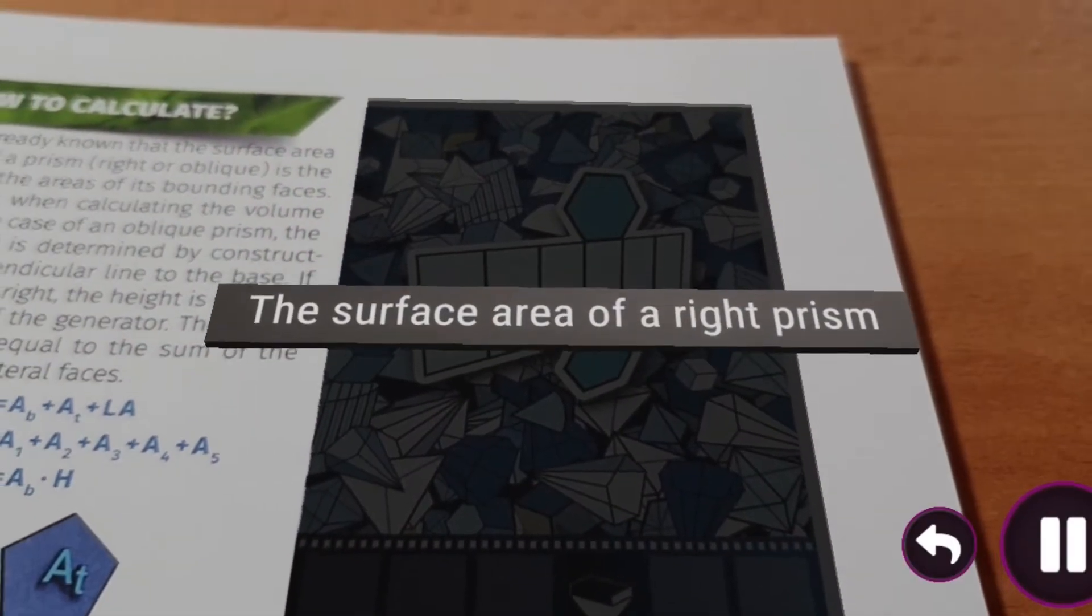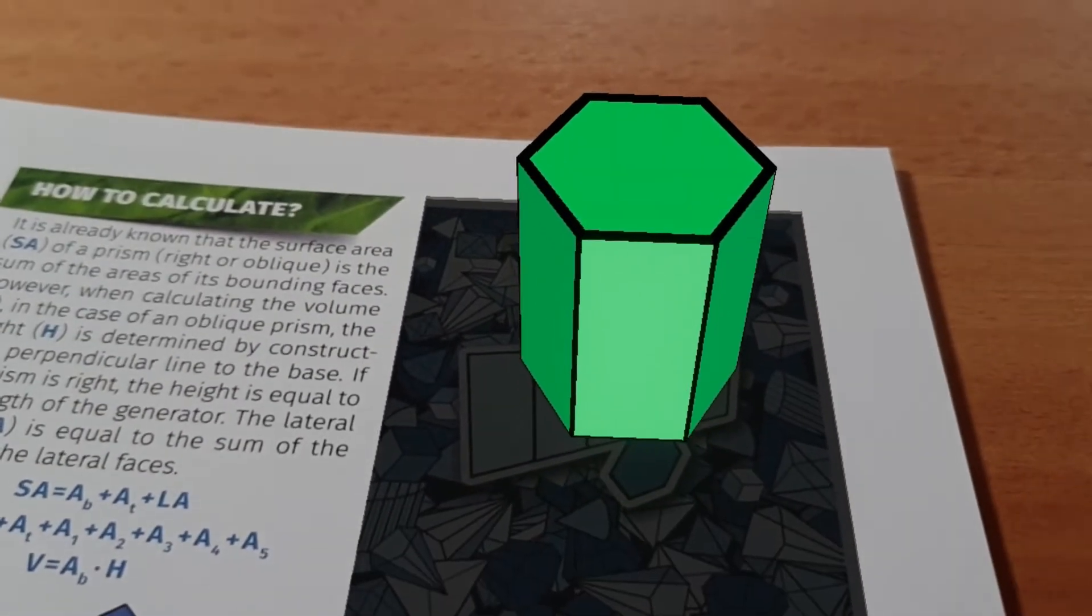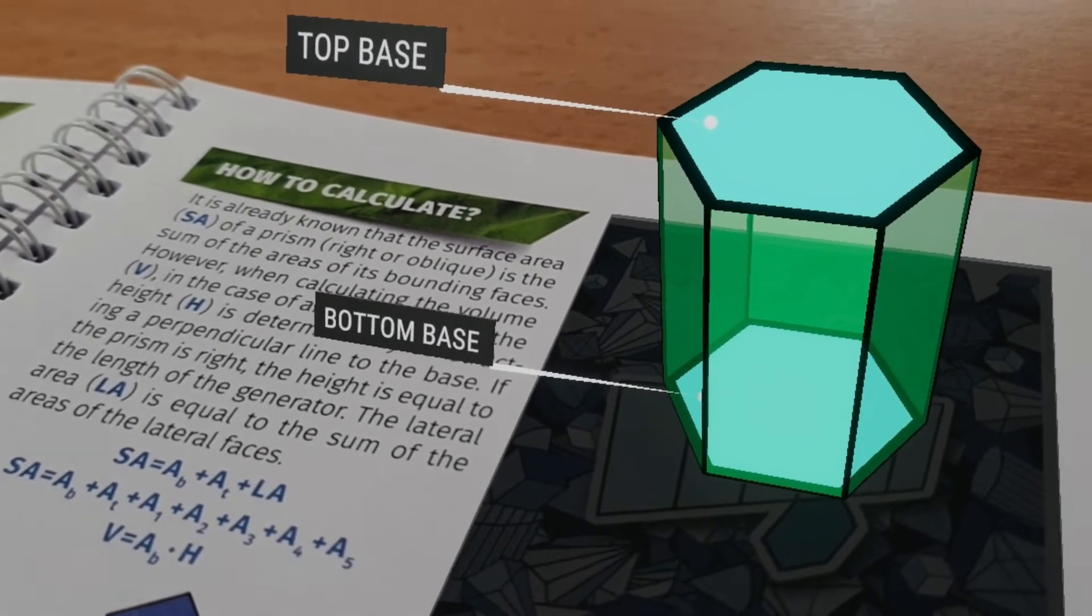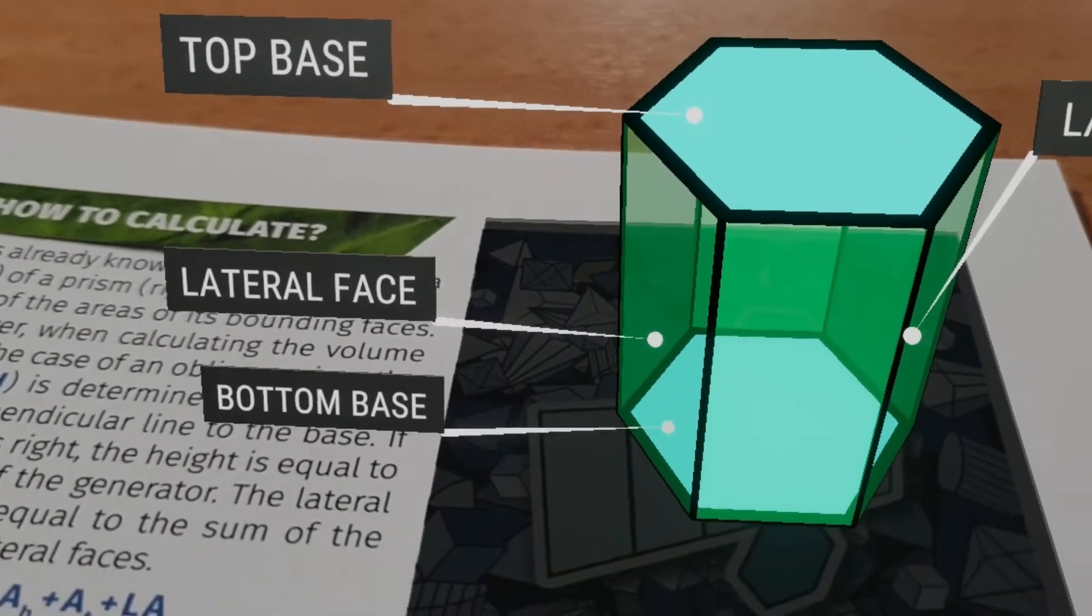The surface area of a right prism. The main parts of a prism are the bottom and top bases, the lateral faces, and the lateral edges.